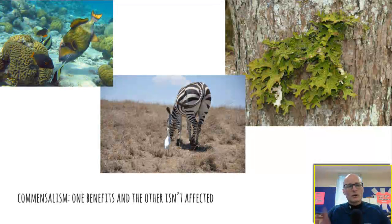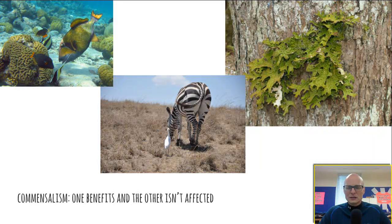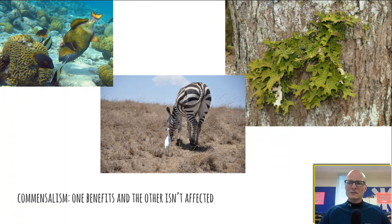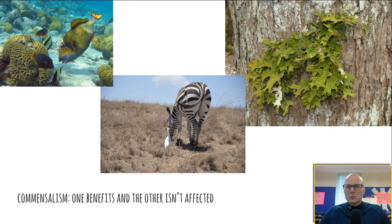Commensalism — one organism benefits and the other is not really affected at all. For example, the zebra and the egret: the zebra digs around eating grass, insects scurry away, and the egret benefits from that opportunity without affecting the zebra. Similarly, lichen on a tree is light and tiny, doesn't affect the tree or take its nutrients, but the lichen benefits by getting a home up closer to the sun.